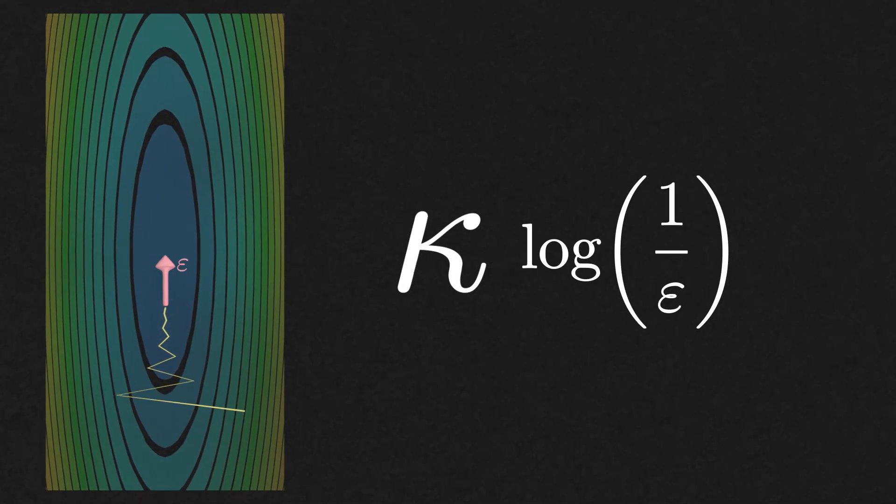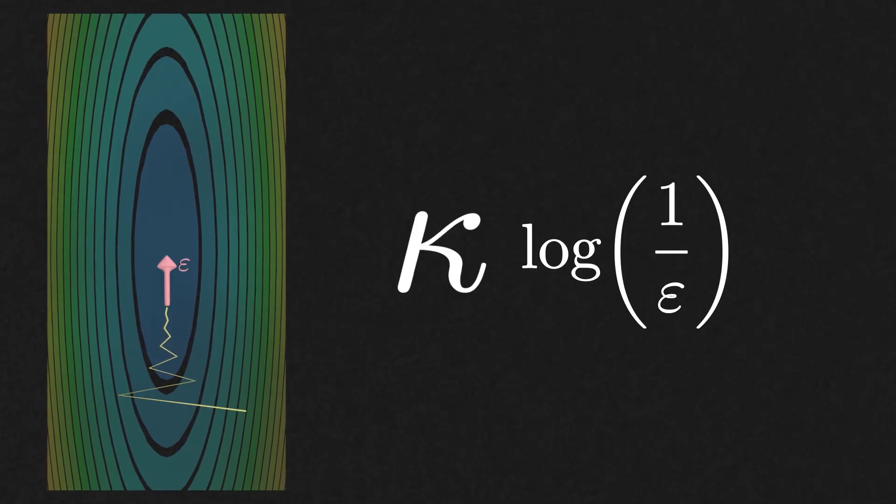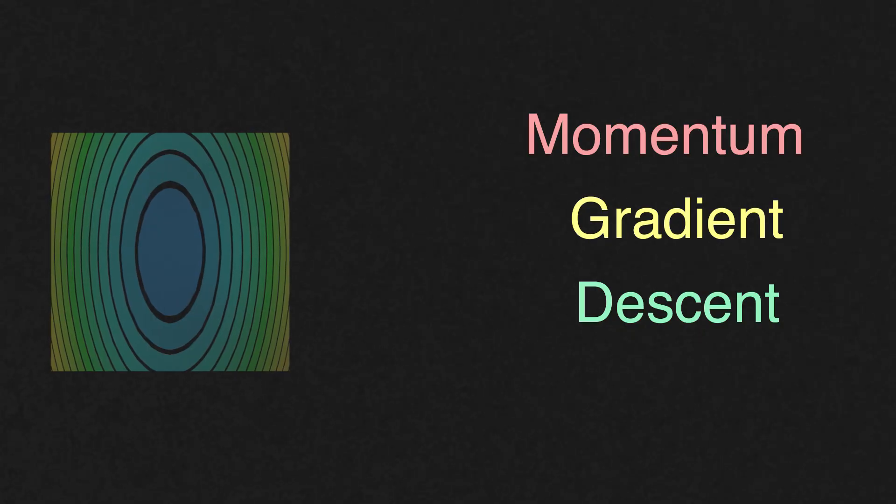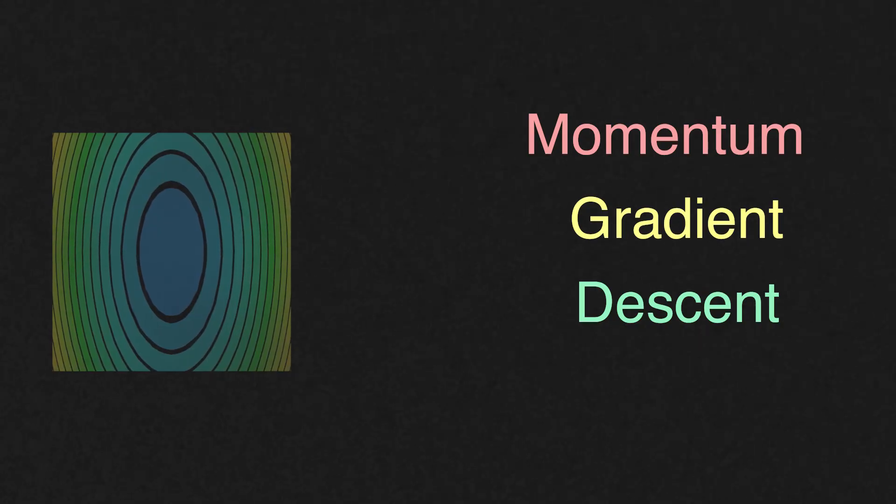Therefore, a large condition number can make gradient descent take a large number of iterations to converge. And now we get to momentum gradient descent. This is a very simple yet extremely powerful idea to fight this problem and to accelerate convergence of gradient descent. Here is how it works.